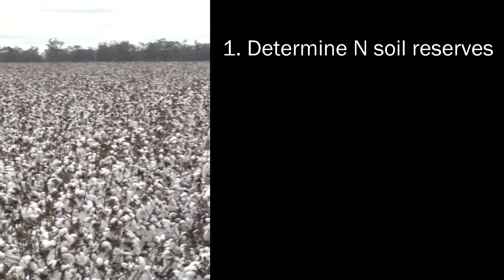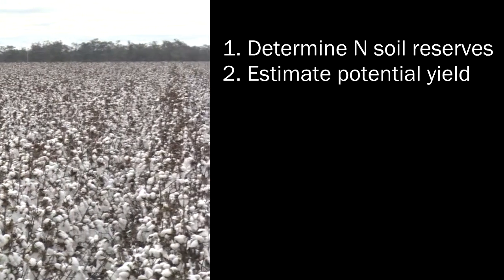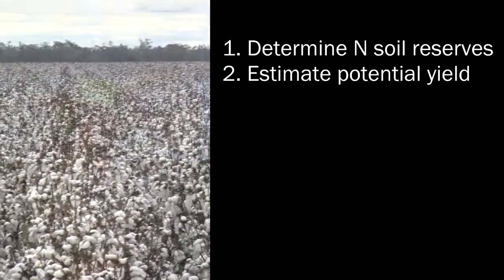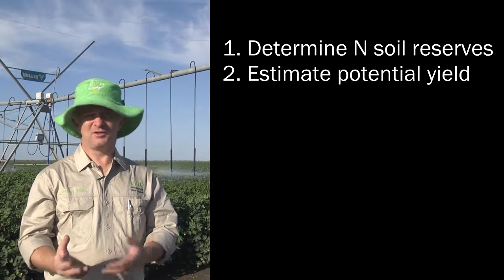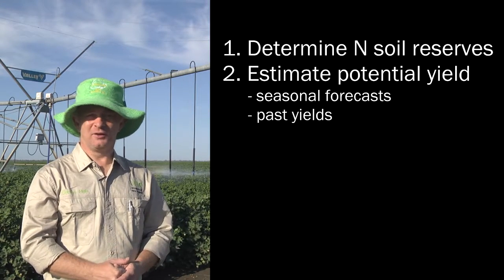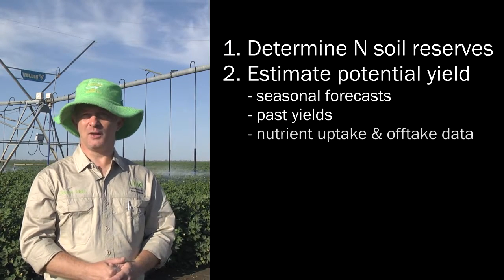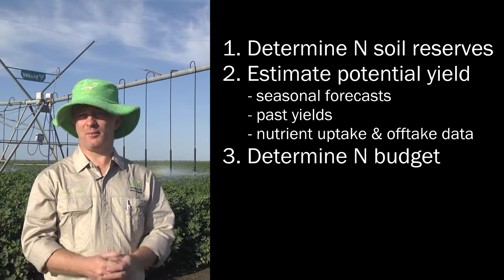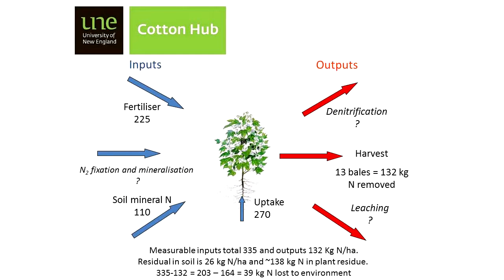Then ask yourself how much crop you're going to grow — what's a realistic bale per hectare outcome? You'll get that from some idea of what the season's holding, what you've grown in previous years, and the data available on nutrient offtake. Then you can generate a budget: we know what's in the soil, we know what the plant's going to need, and you can work out how much nitrogen to put down to achieve that.